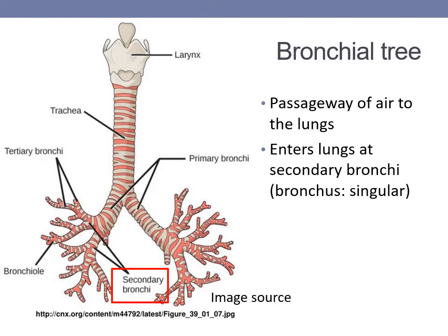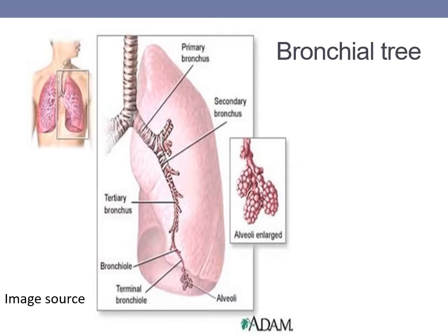The trachea branches into a right primary bronchus and a left primary bronchus. These primary bronchi further branch into secondary bronchi — three on the right side and two on the left — corresponding to the three lobes of the right lung and two lobes of the left. The secondary bronchi enter the lobes of the lungs and further branch into tertiary bronchi, then into bronchioles, the smallest air passages that lead to the alveoli — the small grape-like structures where gas exchange occurs.